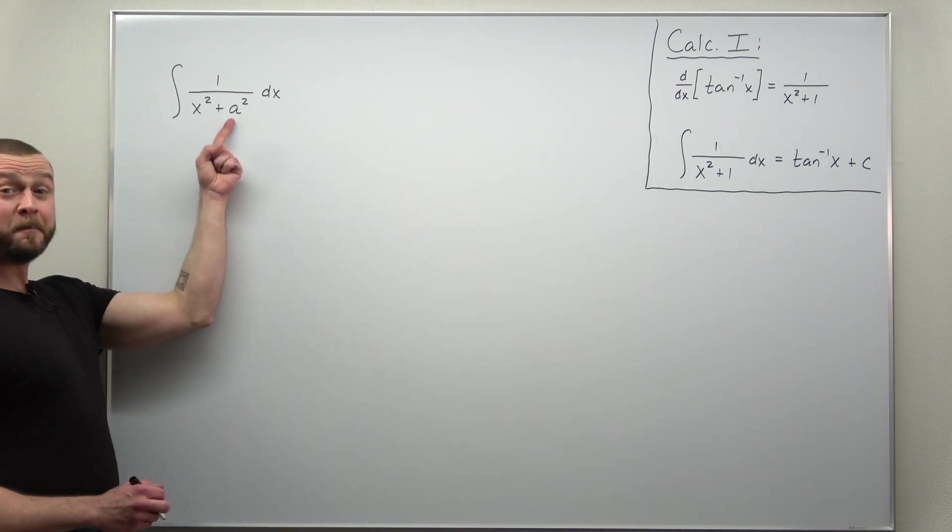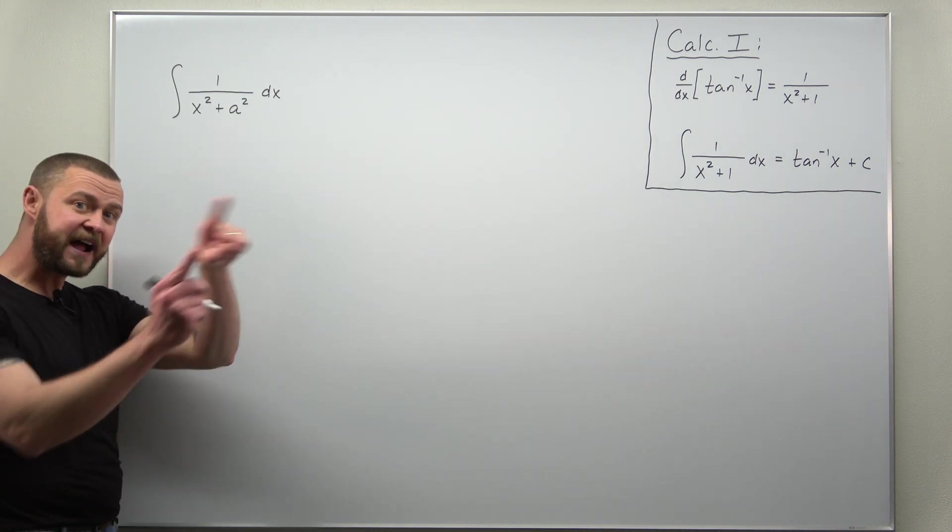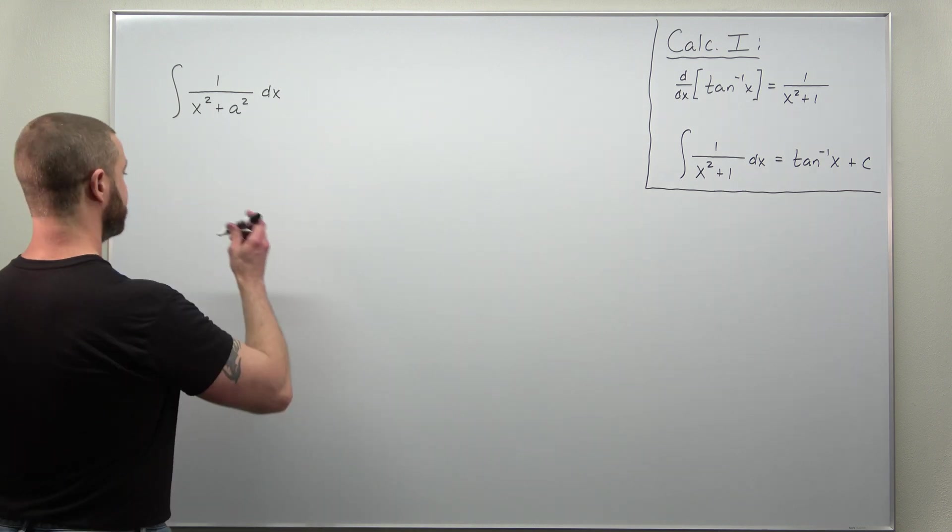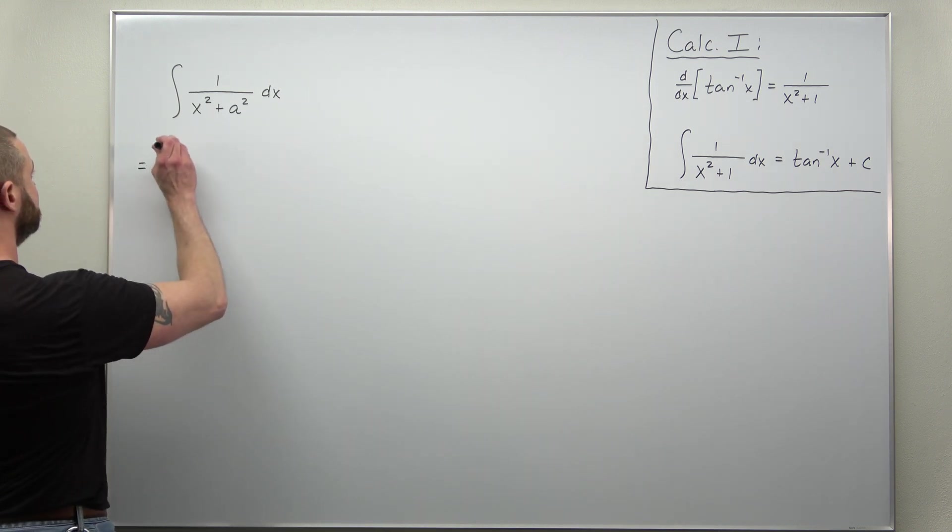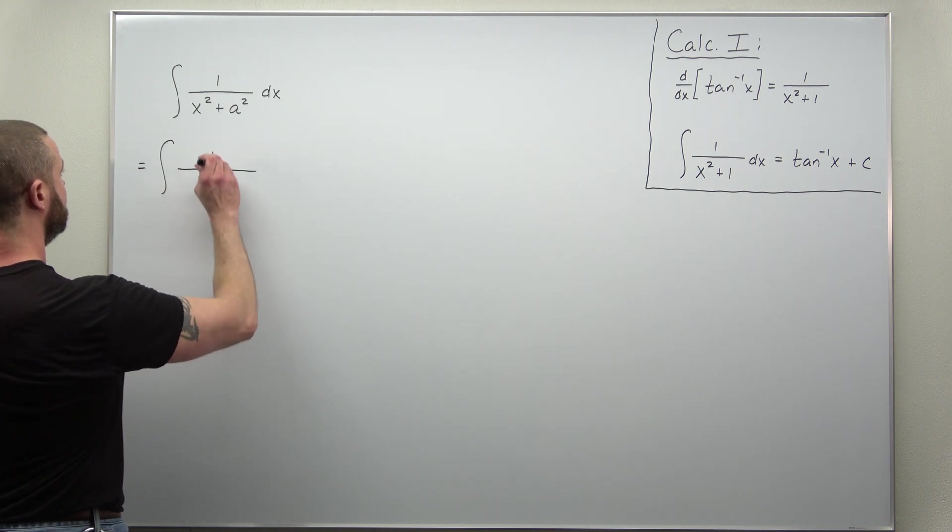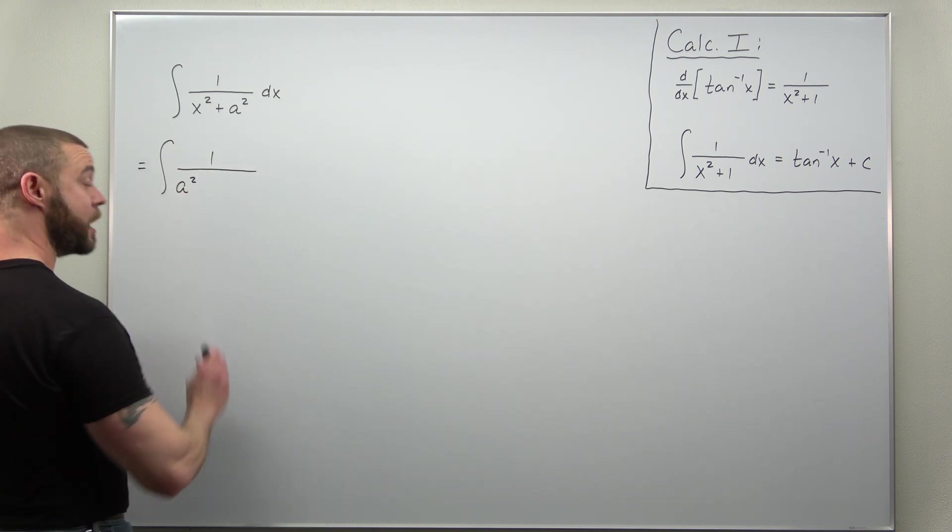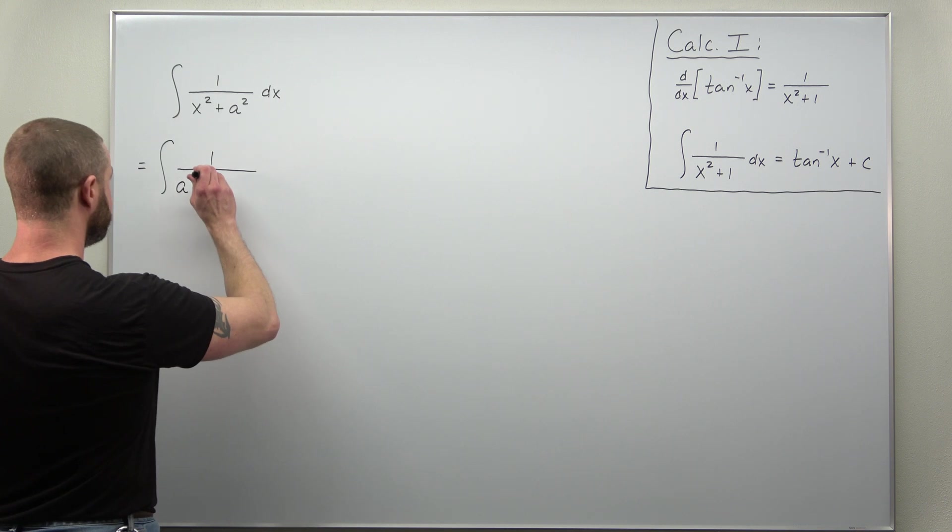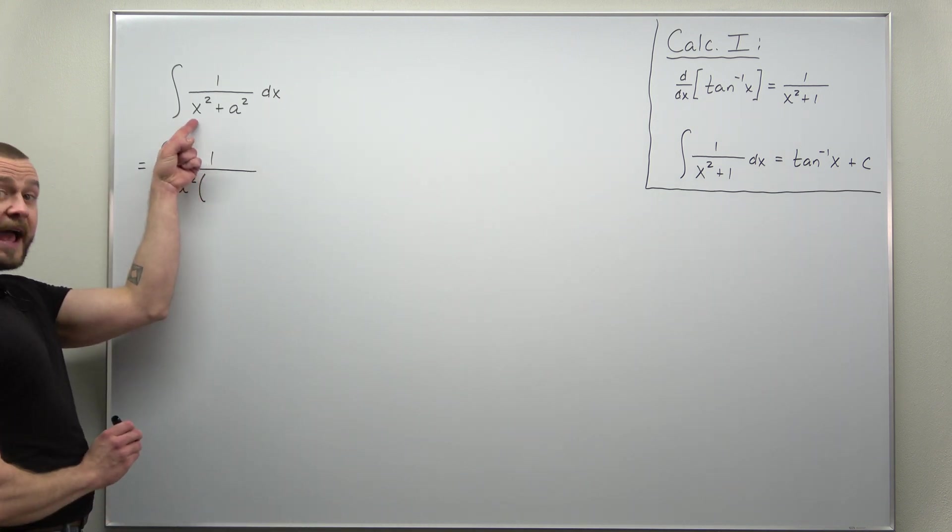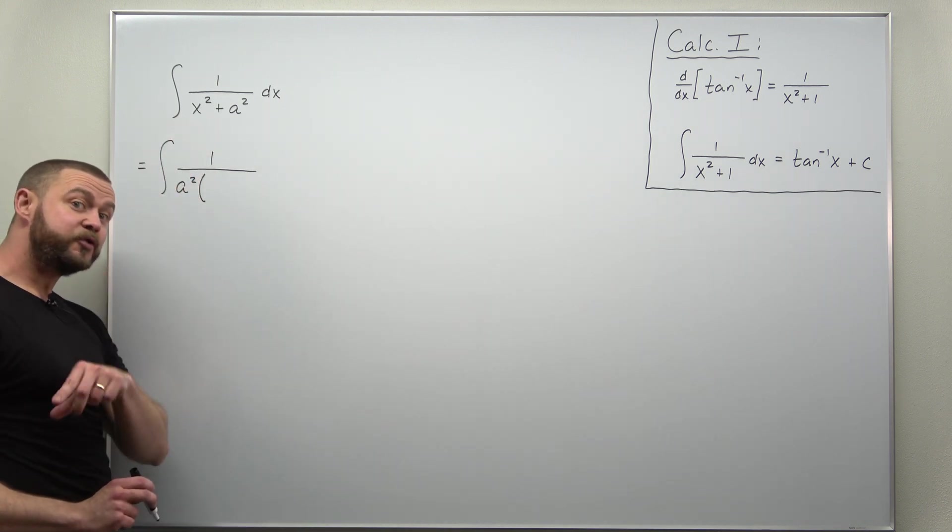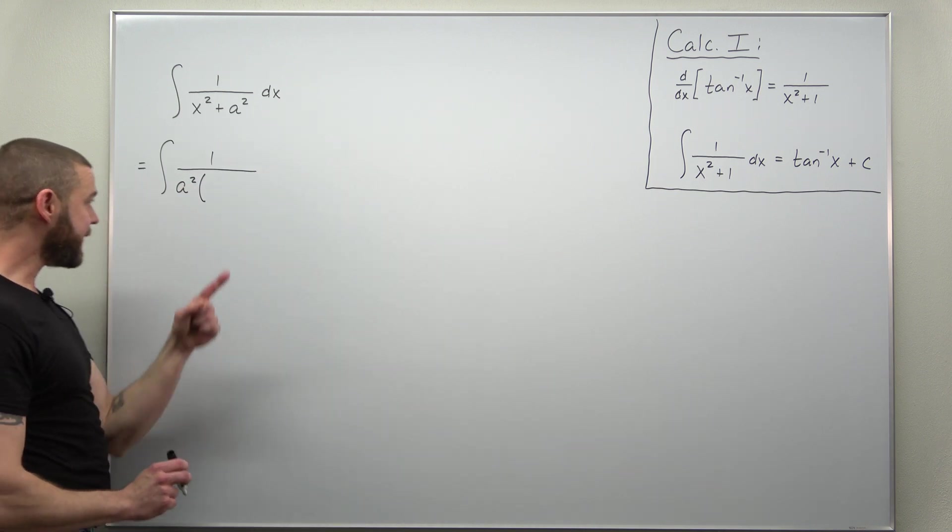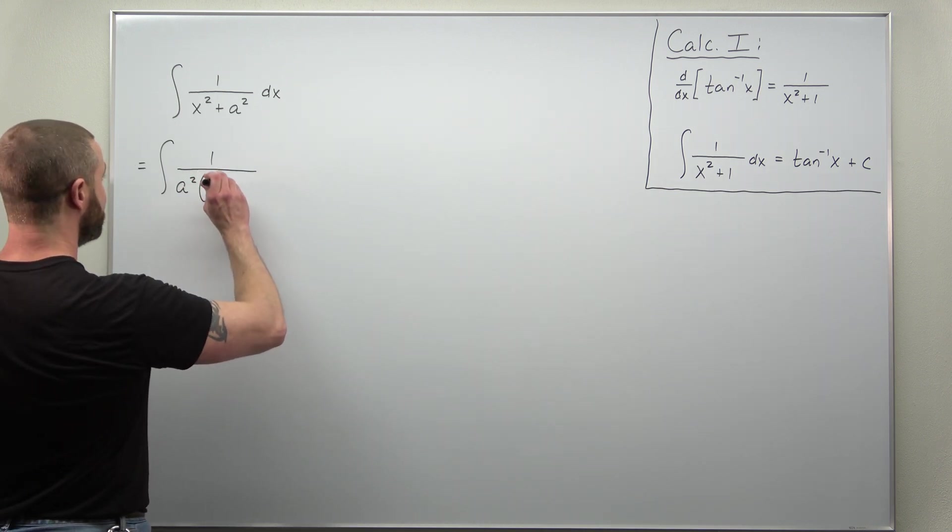Well let's make that a 1 there. Let's factor a squared out, so I'll write this in the denominator—I'm factoring out a squared. x squared, in order to correctly multiply that back, that'll come out to be x squared over a squared.